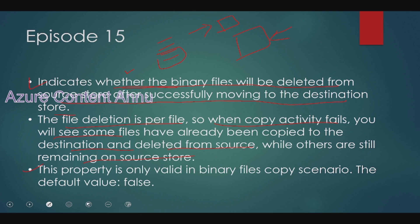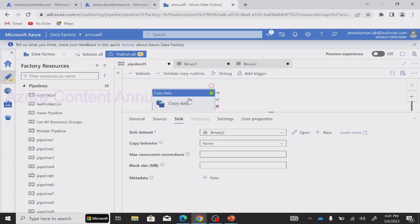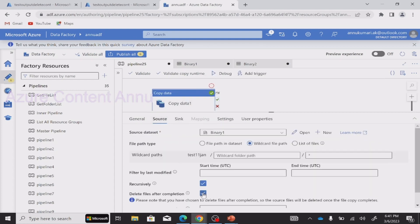This property is only valid in the binary files copy scenario — it is not present in any other file format. It is only present when you select binary as the file format in the source dataset. You also cannot use any other file format in the sink when using binary as the source — both source and sink file formats must be binary when your requirement is to delete files after completion. And as discussed, the default value is false, so you need to explicitly select this option.